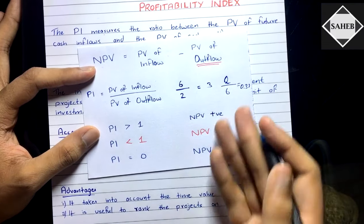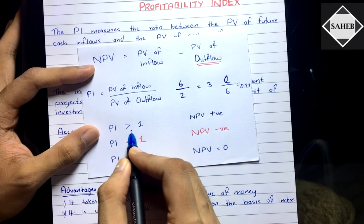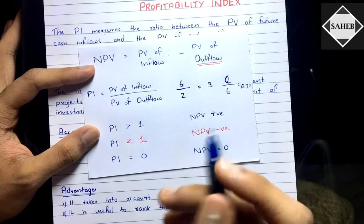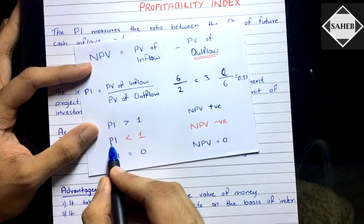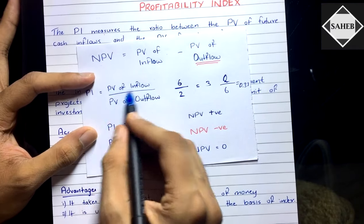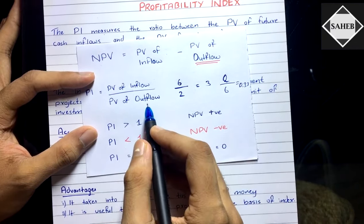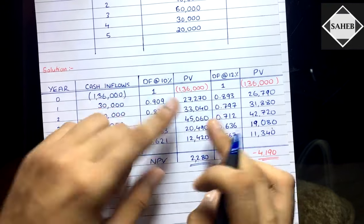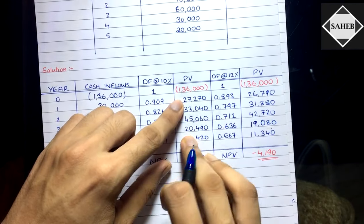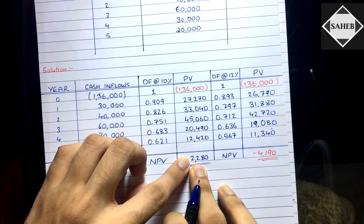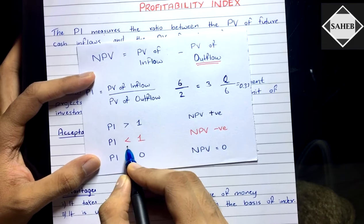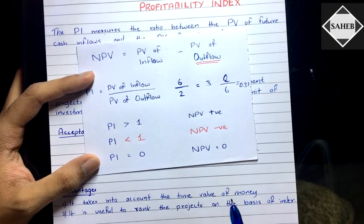It's simple math: whenever the numerator is bigger, the result is greater than one; when the numerator is smaller than the denominator, the result is less than one. So whenever PI is greater than one, NPV must be positive and we accept the project. Both techniques — Profitability Index and NPV — give the same decision. When PI is less than one, the outflow exceeds the inflow, so NPV will be negative and we reject the project.